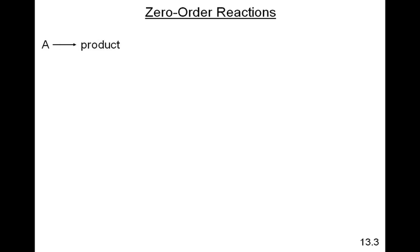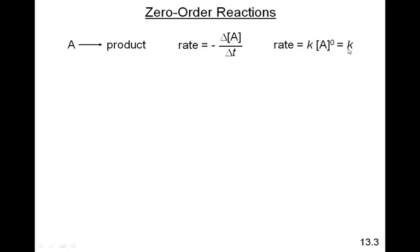Zero order reactions. Again, simple reaction — one single reactant becoming product. The rate is equal to minus the change in the concentration of A over time. Because this is a zero order reaction, A is raised to the zero power. In other words, what we're saying is that the rate is not at all dependent upon the concentration of A — which doesn't happen often, but it does happen sometimes in certain reactions. So the rate is just equal to the value of K. It's not dependent upon the concentration at all. K is rate divided by A to the zero power, which is just equal to rate, because A to the zero power is 1, and the units of K are molarity per second.